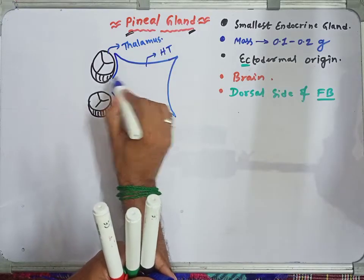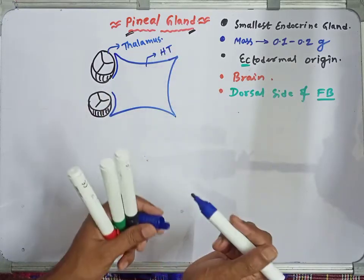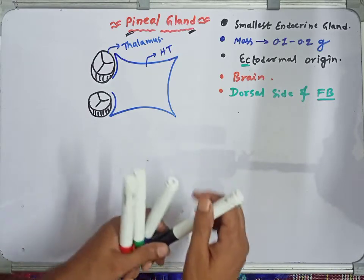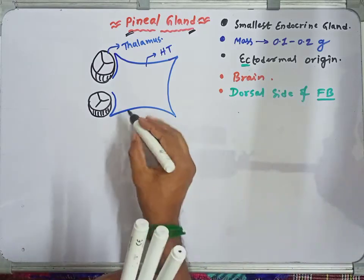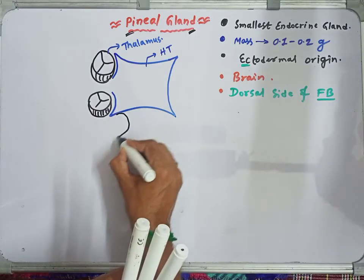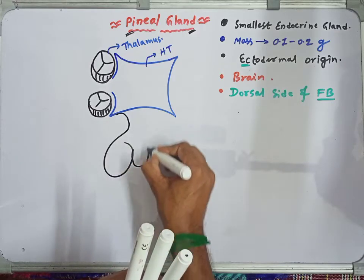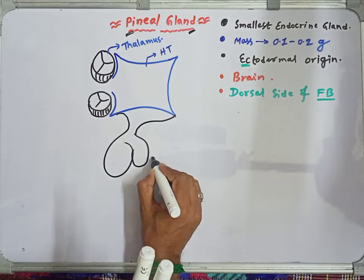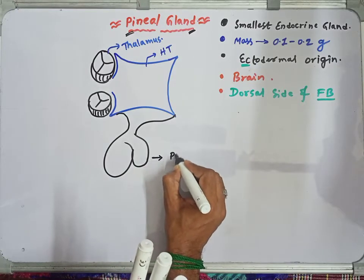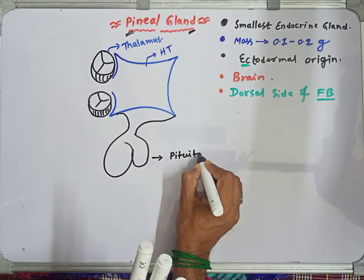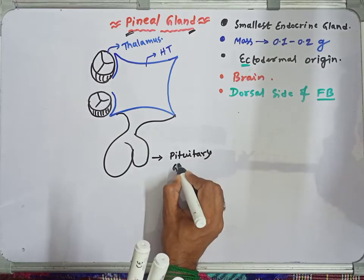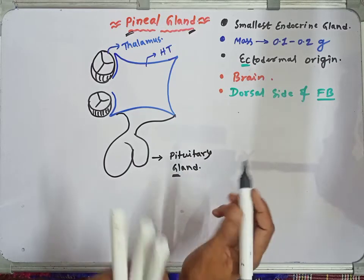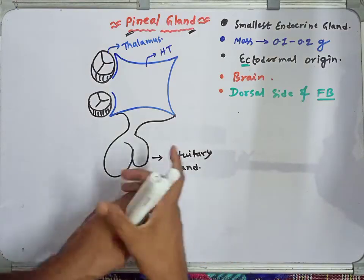So behind the thalamus is the hypothalamus. Below the hypothalamus, a remarkable gland is formed whose name is the pituitary gland — p-i-t-u-i-t-a-r-y. The pituitary gland is also called the master gland.